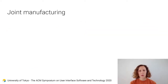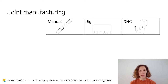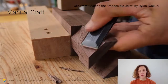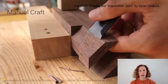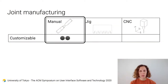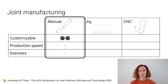So, how are wood joints normally manufactured? There are three common techniques: manual craft, power tools with jigs, and CNC milling. When manually crafting joints, there are not so many geometrical restrictions, as humans have a large range of freedom of motion. Crafted joints are therefore highly customizable. But the production speed is slow and it's very difficult. Crafting joints by hand is an art that can be mastered only after long training.